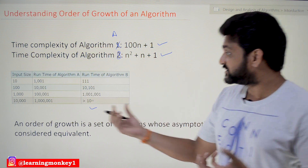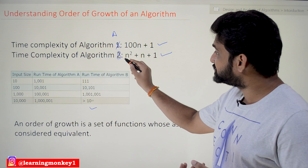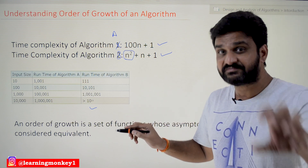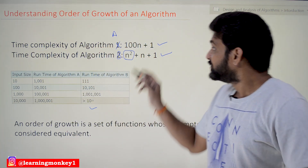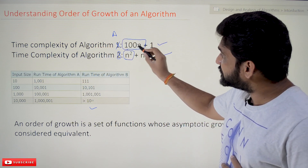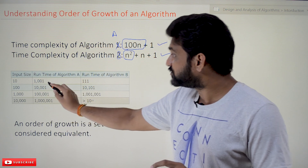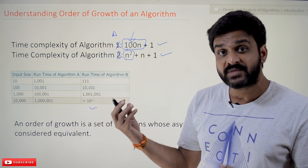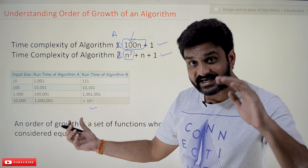The term which is influencing here is n squared. N squared is the higher-order term which makes the maximum influence on the rate at which the number of steps are getting executed. For example, the significance of 100 into n is more when the input size is very low — that is why we got 1001 steps. But the significance of coefficients of the higher-order term becomes negligible as the input size increases.